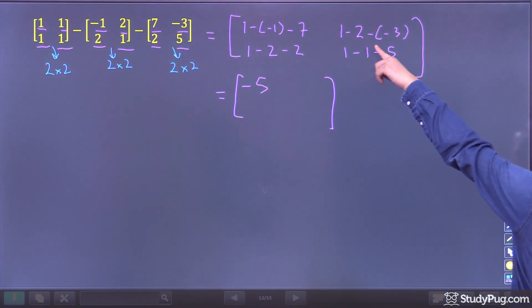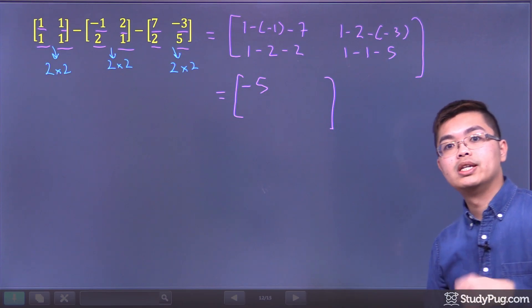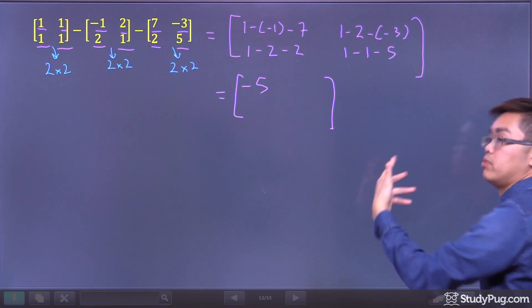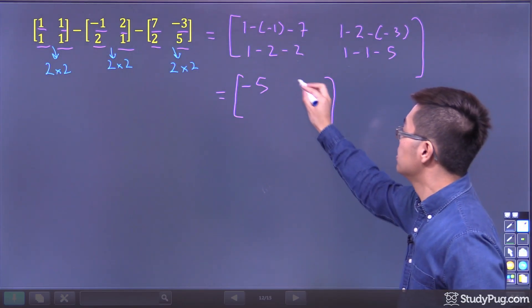Here we have 1 minus 2. 1 minus 2 is negative 1. Negative 1 minus minus 3, that's negative 1 plus 3, that's going to give us a 2.